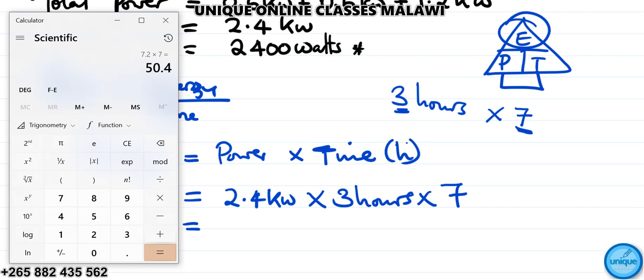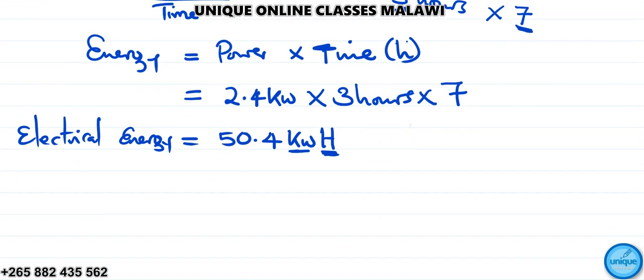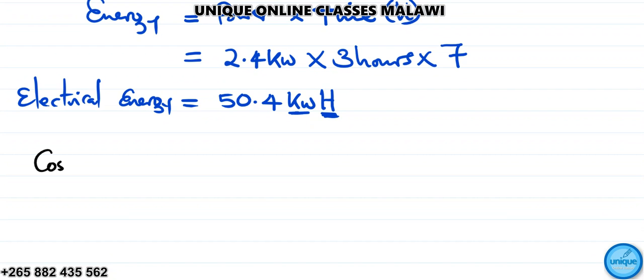So we have 50.4 kilowatt hours. That's the total electrical energy. Make sure power is in kilowatts and your time is in hours. Now let's find the cost of electrical energy.